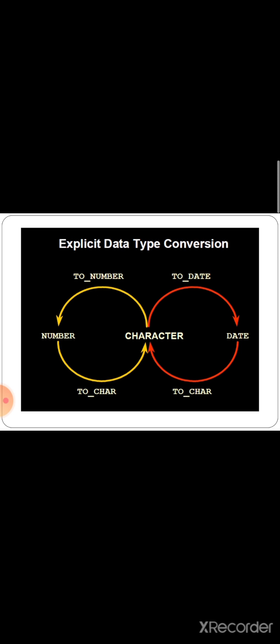Before that, let's look at the diagram of explicit data type conversions, where number, character, and date are shown. The yellow arrow marks indicate the conversions: from character to number, that conversion is TO_NUMBER; from number to character, that conversion is TO_CHAR. In the same way, from character to date one conversion is made, and another one is from date to character. These are what explicit data type conversions cover, and we can make these kinds of conversions using the conversion functions.